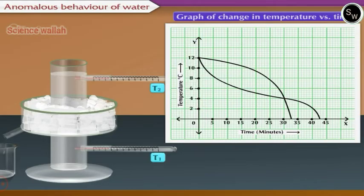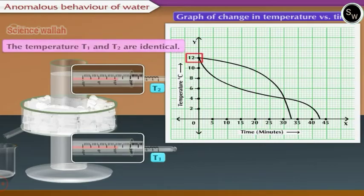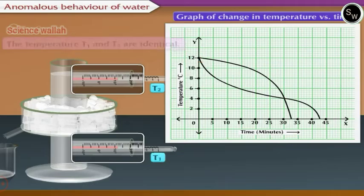This graph shows that initially both thermometers show the same temperature. That means the temperatures T1 and T2 are identical. However, as time passes, temperature T1 of water in the lower part of the cylinder decreases fast, while temperature T2 of water in the upper part decreases comparatively very slowly.